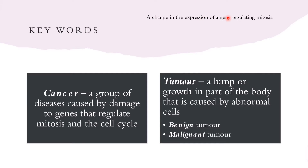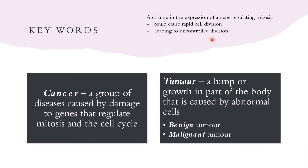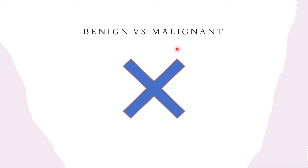A change in the expression of a gene that regulates mitosis is a cause of cancer — damage to a gene that regulates the cell cycle. When there is a change in the expression of a gene that regulates cell division, this could cause rapid cell division. If this change increases the rate of cell division, it can lead to uncontrolled division and then to the development of a tumor — a mass of cells forming a growth.